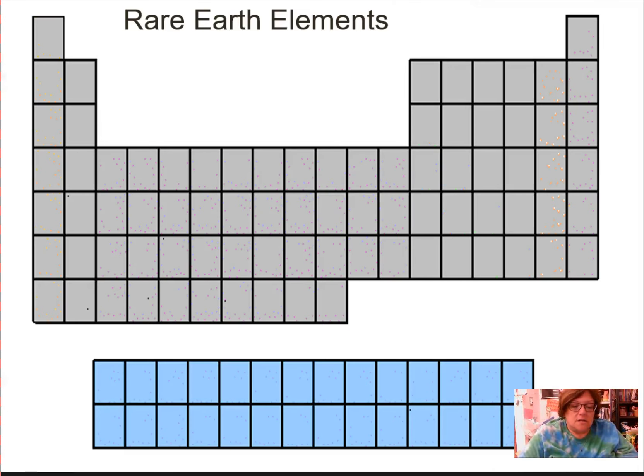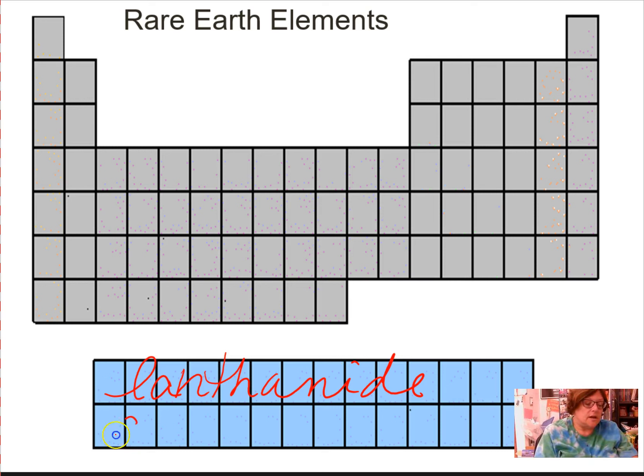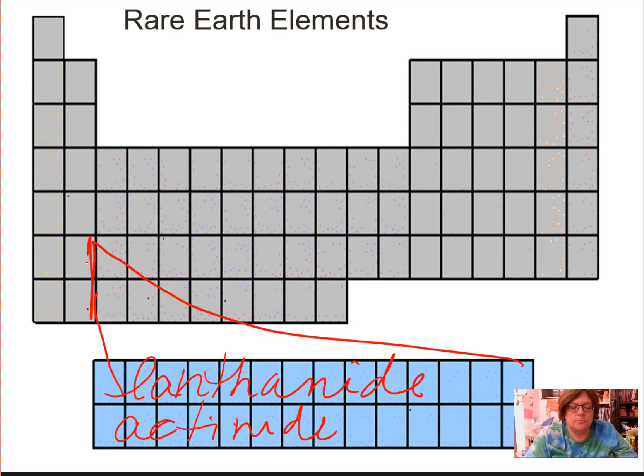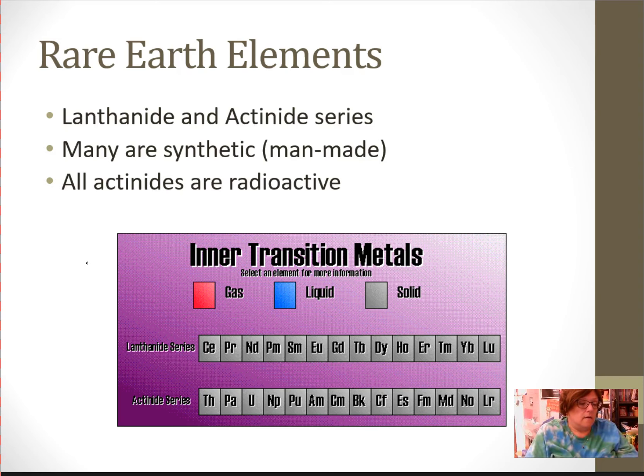Rare earth elements underneath that. There's no fill in the blanks to go there, but we tend to refer to this row as the lanthanide series because lanthanum is the one that starts there. And actinide, because actinium starts the next row. These guys actually fit in here. And you'll see that in class. They go right there, if we cut that in two. Rare earth elements are usually, or a lot of them are man-made, meaning they're synthetic. They are radioactive, and they a lot of times have some good properties. The actinides, which is the bottom row, are all radioactive.